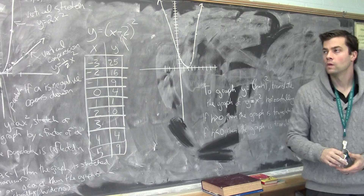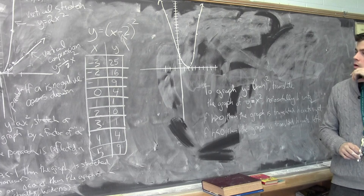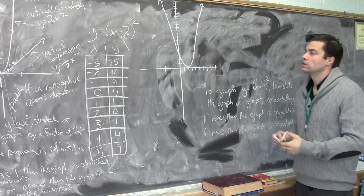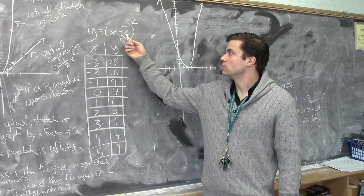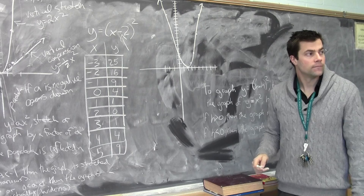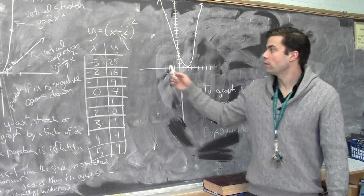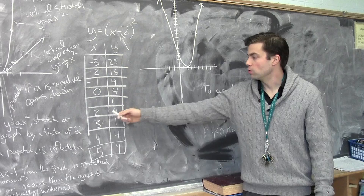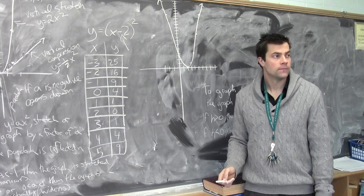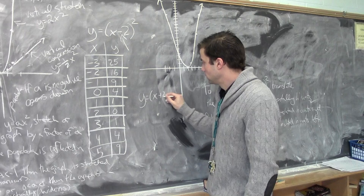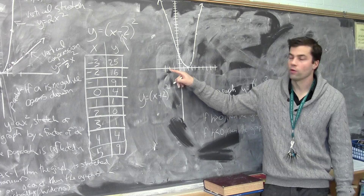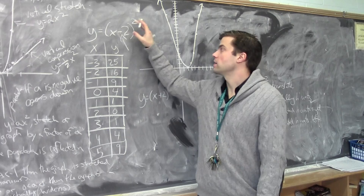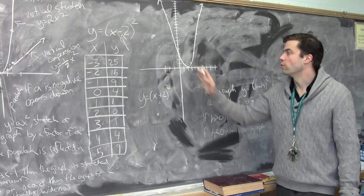A student asks about the negative side. The teacher explains: plugging in x = -3, we get -3 minus 2 = -5, squared is 25. The vertex would be at (2, 0), not on the left. If the equation were (x plus 2) squared — that is x plus 2 — the vertex would actually be on the left side, over here. That's because it's contained in brackets and then squared, so it's changing the translation of where the vertex is positioned.